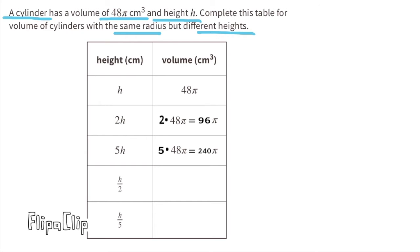The height of the next cylinder is h over 2, or half of h — that means it has a height of half a centimeter. Since the height is only half a centimeter, the volume will be half of 48π. Half of 48π, or 48π divided by 2, equals 24π. So when the height is half a centimeter, the volume is 24π centimeters cubed.